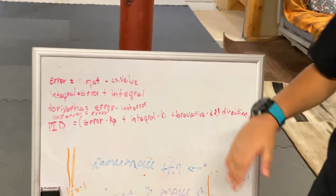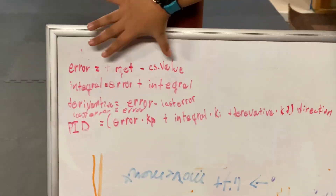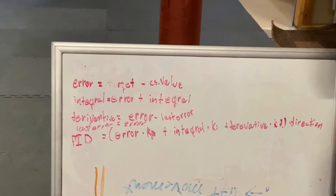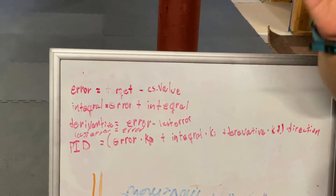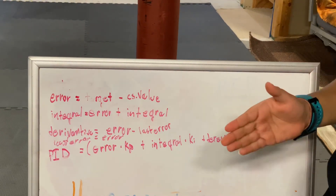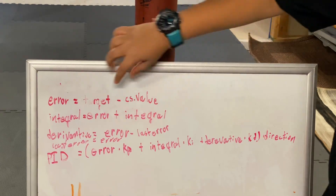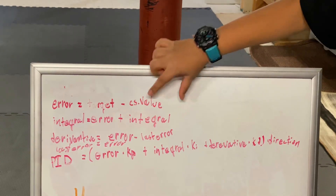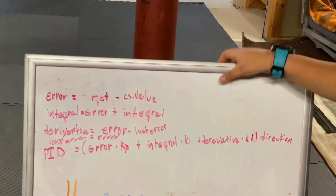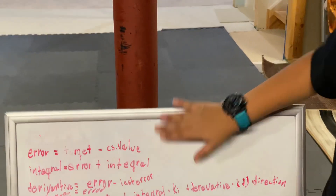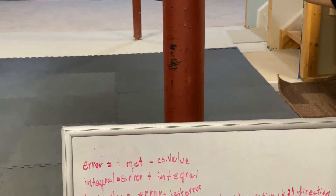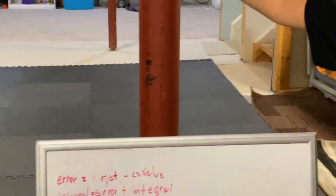The second part is Integral. The idea behind integral is that if we're perfectly following a line, the sum of all the errors should add up to zero. We take our error and keep adding it to the integral, so it keeps accumulating. Sometimes your error will be positive, sometimes negative — ideally you'd get zero integral.